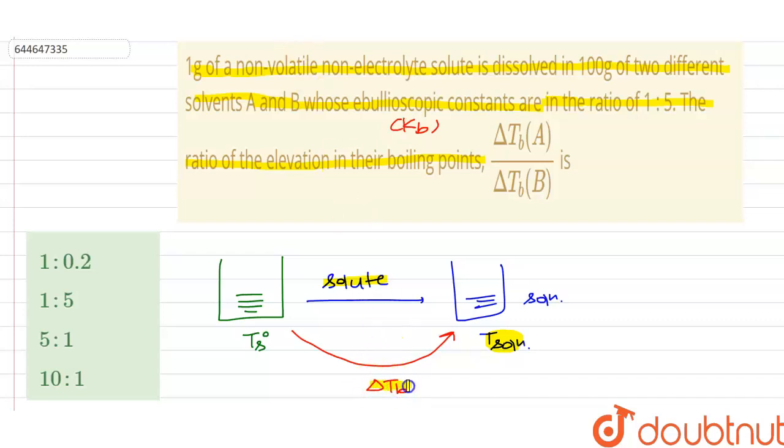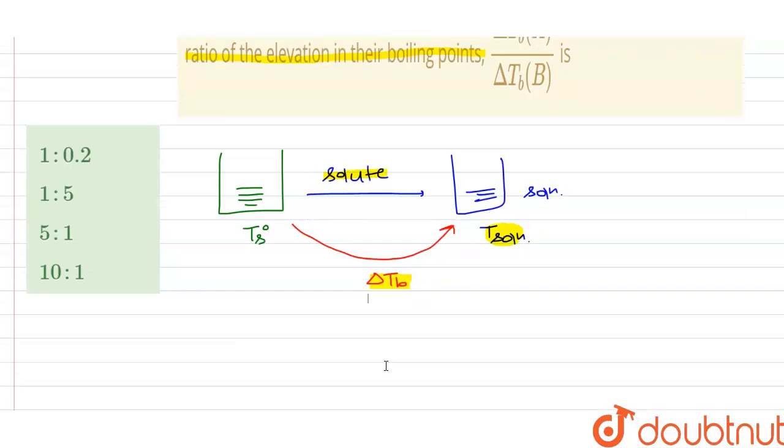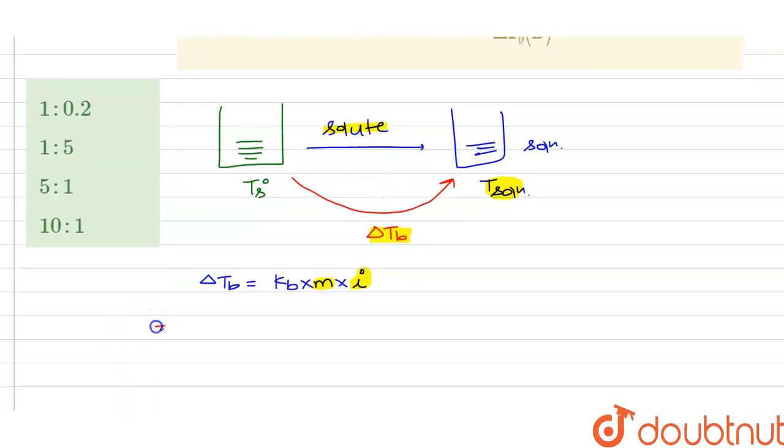There is a formula which tells the relation between the elevation in boiling point, the ebullioscopic constant Kb, and the concentration, which is molality. i is the Van't Hoff factor, which tells about the extent of association and dissociation of the solute in solution. In this case, first of all we have to